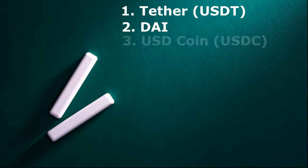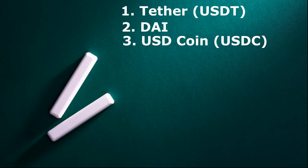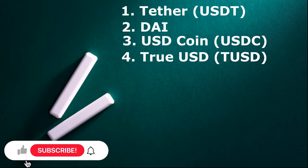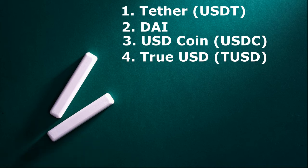The next on the list is USDC, otherwise known as USD Coin, which is identified as the official stablecoin for Coinbase. Then we have TUSD, otherwise known as True USD. The team behind True USD includes Google, UC Berkeley, Palantir, and Stanford, and its value is one True USD to one US dollar.